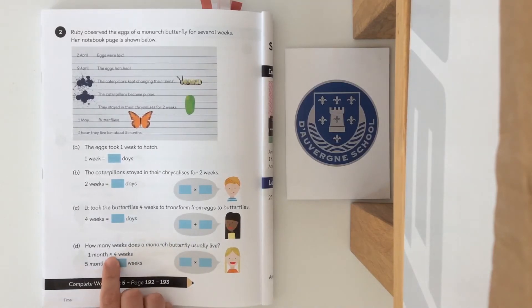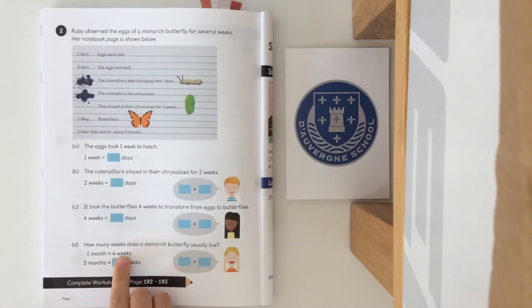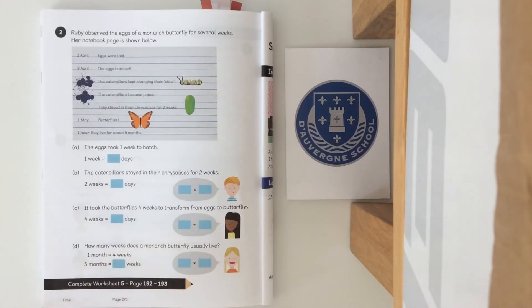Just to point out here, see if you can remember what those wiggly lines mean. They mean the same as. So one month is the same as four weeks, and five months is the same as... Pause the video now whilst you have a go at that.